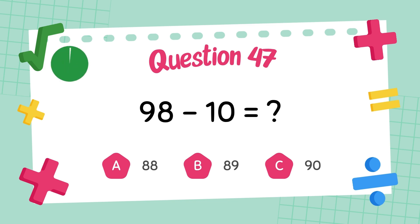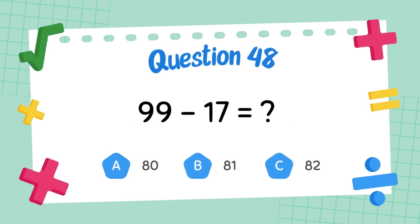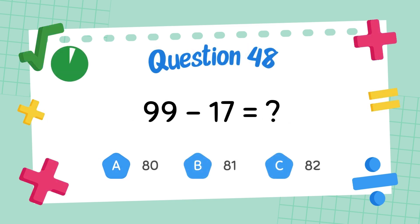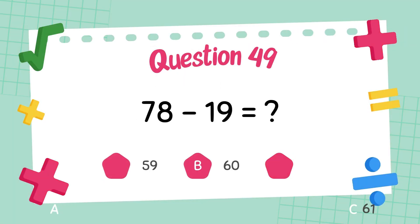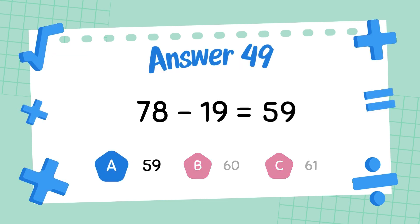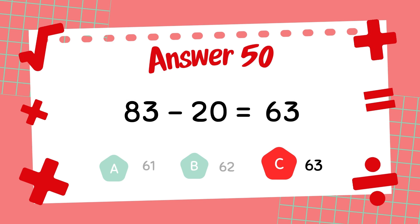What is 98 minus 10? The answer is 88. What is 99 minus 17? The answer is 82. What is 78 minus 19? The answer is 59. What is 83 minus 20? The answer is 63.